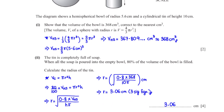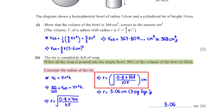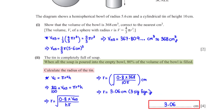The tin is completely full of soup. When all the soup is poured into the empty bowl, 80% of the volume of the bowl is filled. Calculate the radius of the tin. The volume of the cylinder equals 80% of the volume of the hemisphere. Using V = πr²h and making r the subject, with volume 368 cm³ and height 10 cm, we get r equals 3.06 cm, rounded to three significant figures.